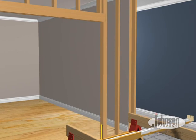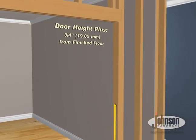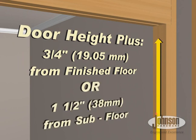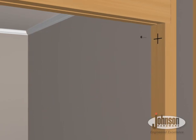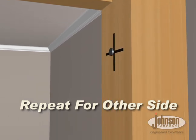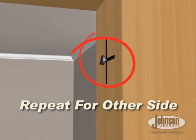Set nail at door height plus 3 quarters of an inch from finished floor or 1 and 1 half inches from subfloor. Mark each rough stud and drive a flat head nail on center, leaving an eighth of an inch protruding. Frame header and brackets will rest on these nails.